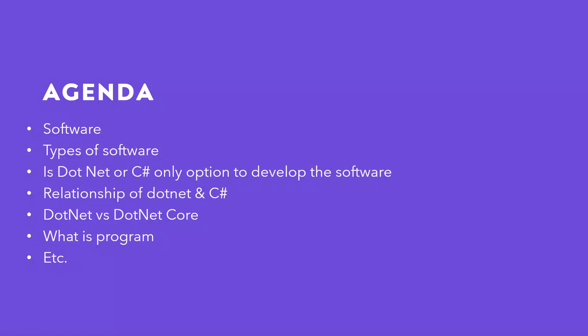Although in this course we will talk about the C# programming language, I am assuming that you are an absolute beginner and want to cover everything from scratch. So before learning about the programming language, let's understand what is the role of a programming language in software development. We will start from: what is software, what are the different types of software, and if you want to develop software, is .NET or C# the only option or do we have other options as well? What is the relation between .NET and C#? These are very basic but important concepts.